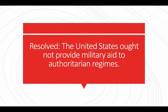Hey everybody, this is the general topic analysis for January-February. Resolved: The United States ought not provide military aid to authoritarian regimes. This was one of the topics I was most happy would be available for JanFeb. While this one wasn't necessarily my favorite, it was way better than most of them. It's pretty exciting to get the chance to work with you all on this one.